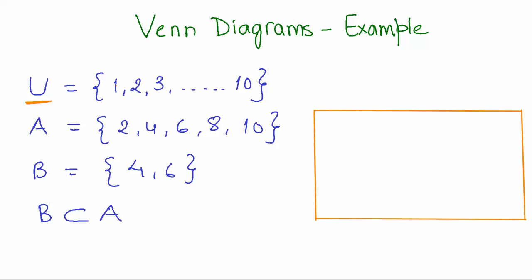Now I have another set A, which is a subset of U and has the even numbers: 2, 4, 6, 8, and 10. Then we have another set B which has two elements, 4 and 6. Please note that B is a subset of A and also a subset of the universal set.